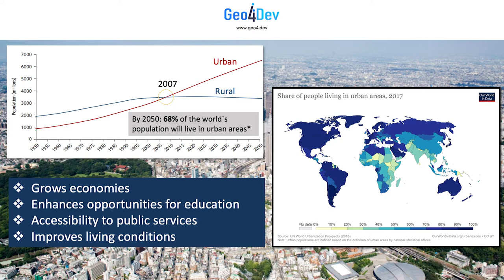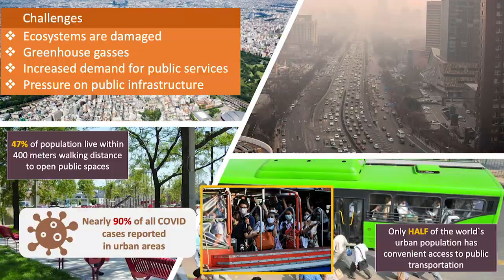Obviously, urbanization has many positive implications. It helps grow economies, enhances opportunities for education, improves accessibility to public services, and in general provides people with better living conditions. But this does not come without immense challenges. Rapid urbanization is causing damage to ecosystems, increased emission of gases, increased demand for public services, pressure on public infrastructure, and an increased gap between rich and poor. Only half of the world's urban population has convenient access to public transportation, and less than half lives within 400 meters walking distance to open public spaces.